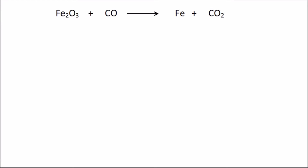This one's a bit more difficult. If you like, you can pause the video and have a go at balancing this yourself. But if you like, you can carry on watching and I'll go through how to work it out. We have iron oxide reacting with carbon monoxide, and that produces iron metal and carbon dioxide gas.